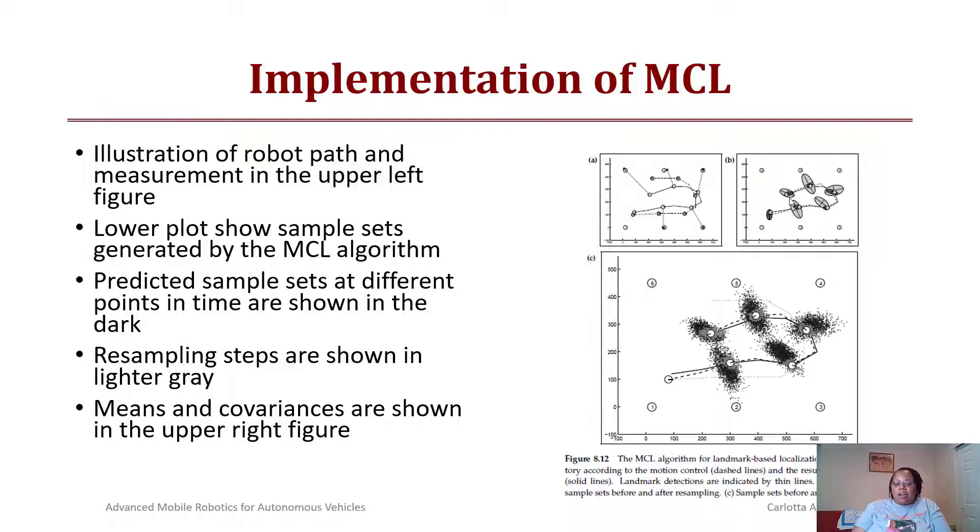The MCL algorithm for landmark-based localization uses a robot trajectory where results from the true trajectory are shown by solid lines, and the landmarks are detected by the thin lines. The covariance and samples are after resampling to show how the robot could localize with respect to landmarks.